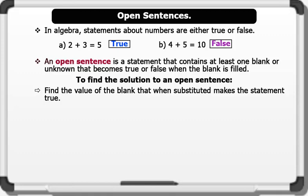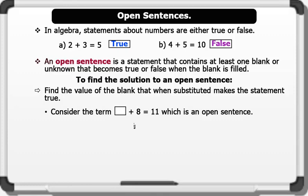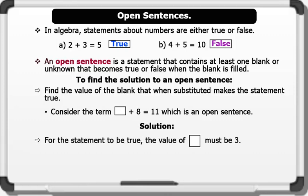Let's see an example. Consider the term blank plus 8 equals 11, which is an open sentence. Solution: For the statement to be true, the value of the blank must be 3. Hence, 3 plus 8 equals 11. Therefore, the blank equals 3.